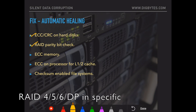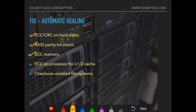RAID parity check: if you have a RAID in use, it can automatically heal corrupt blocks. ECC memory: error correction code is now inbuilt into memory modules, so any data loaded in or updated in memory undergoes verification to prevent corruption. Error correction code on processor: Itanium processors now come with ECC, which allows for verification of blocks on L1 and L2 cache. Checksum-enabled file systems like ZFS can perform data validation in the background when data is read and written.